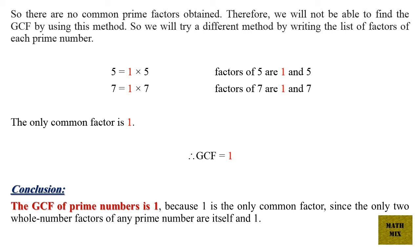The only common factor is 1. Therefore, GCF equals 1. Conclusion: The GCF of prime numbers is 1 because 1 is the only common factor, since the only two whole number factors of any prime number are itself and 1.